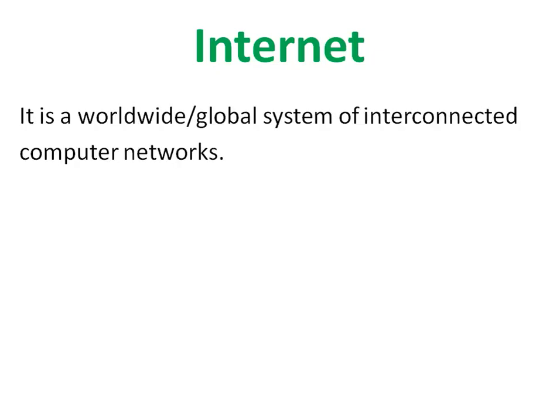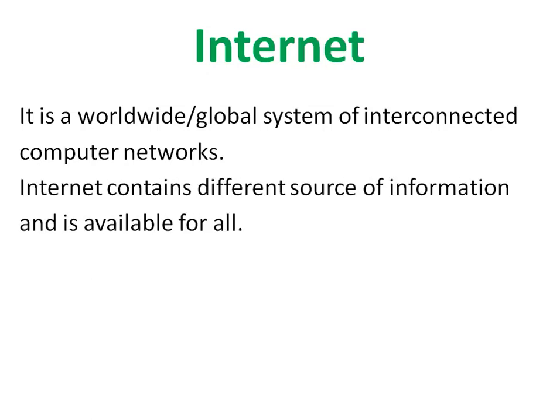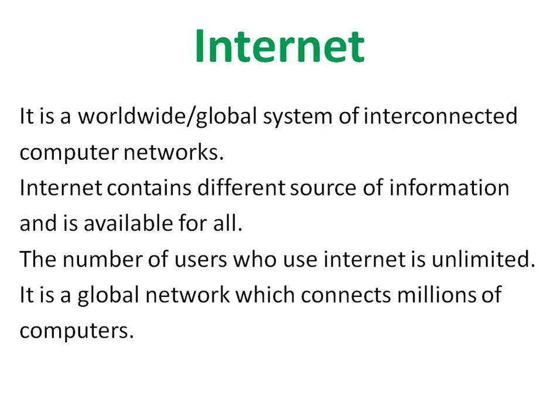Internet is a worldwide or global system of interconnected computer networks. Internet contains a different source of information and is available for all. The number of users who use internet is unlimited. Internet is a global network which connects millions of computers.